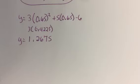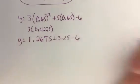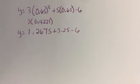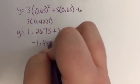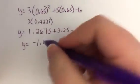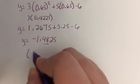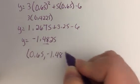Okay, and then 5 times 0.65, and you get 3.25 minus 6. All right, and so now let's just finish this up. So 1.2675 plus 3.25 minus 6 equals negative 1.4825, okay. Again, we can round that to two decimal places. So our second point of intersection should be at 0.65 comma negative 1.48-ish.